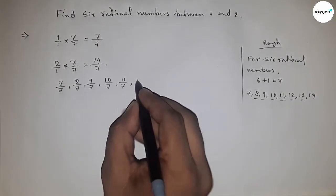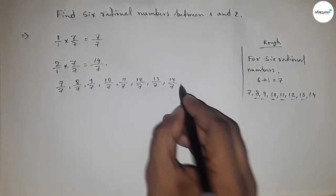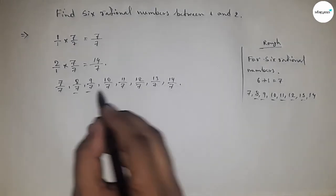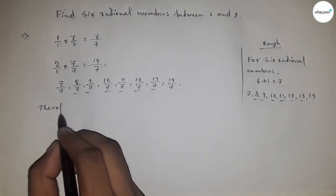...to last, fourteen upon seven. These are the six rational numbers between one and two. Therefore, the six rational numbers between one and two are: